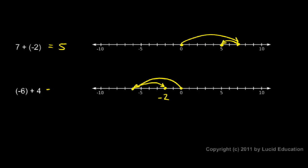And that is number negative 2 on the number line. So negative 6 plus 4 is negative 2. Notice that out of these two original numbers, the negative 6 has the larger absolute value, and the result is negative.